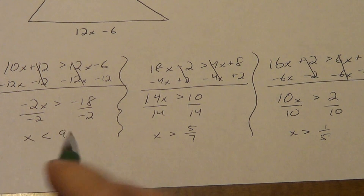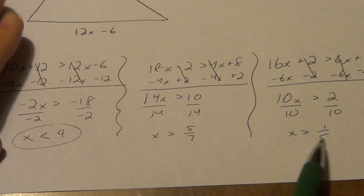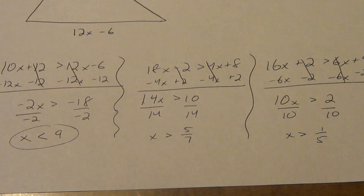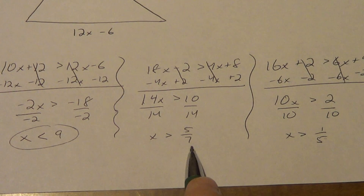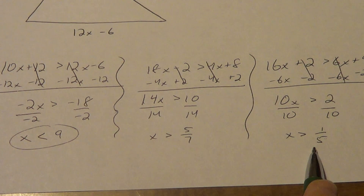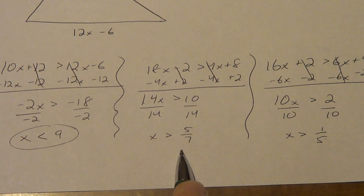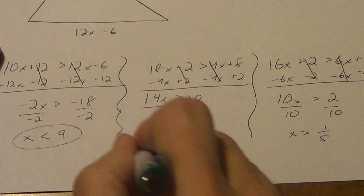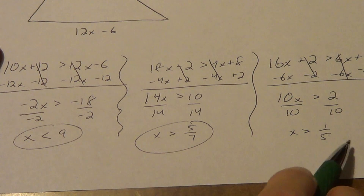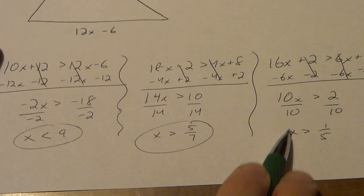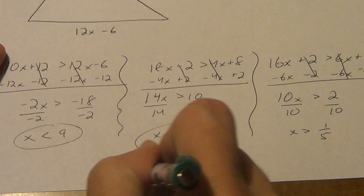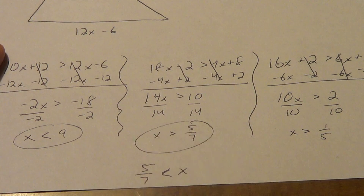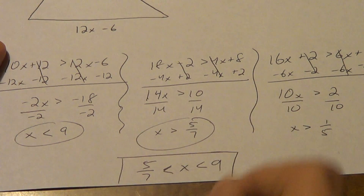The only less than is x less than 9, so that's definitely part of the answer. Which greater than is more restrictive — x greater than 5 sevenths, or x greater than 1 fifth? Convert to decimals: 5 sevenths is about 0.714, 1 fifth is 0.2. So 0.5 is okay for 1 fifth but not 5 sevenths. 5 sevenths is more restrictive. Put the smallest first: 5 sevenths is less than x is less than 9. That is the final answer.